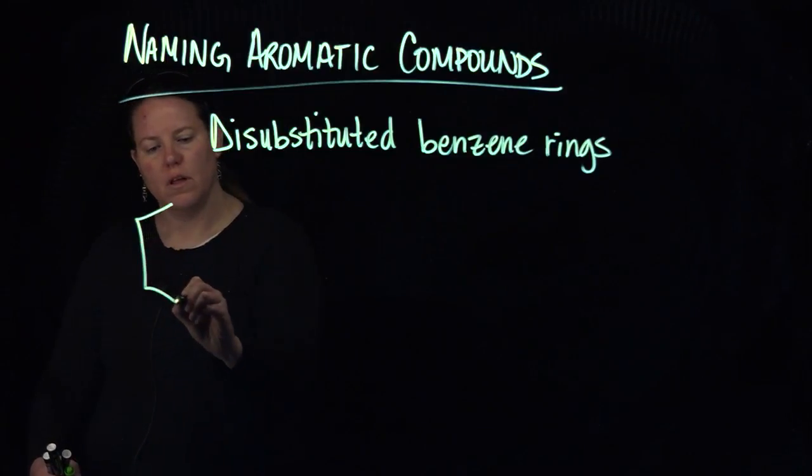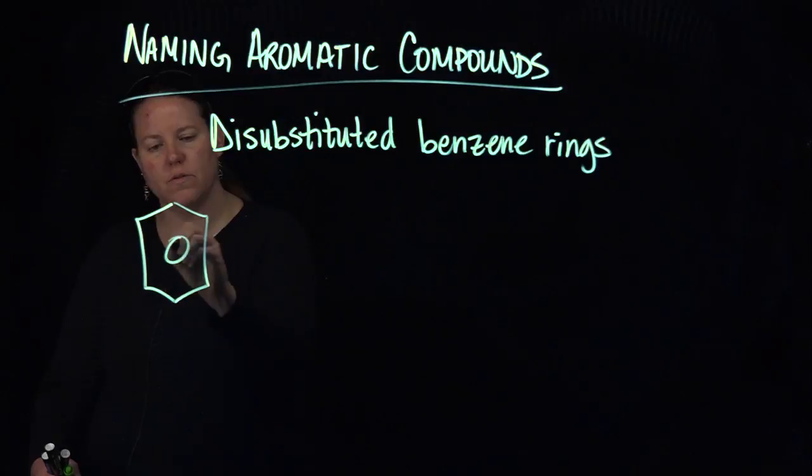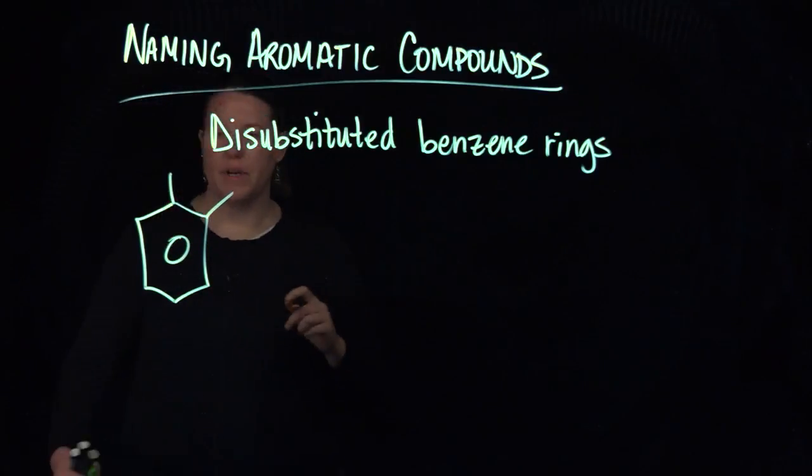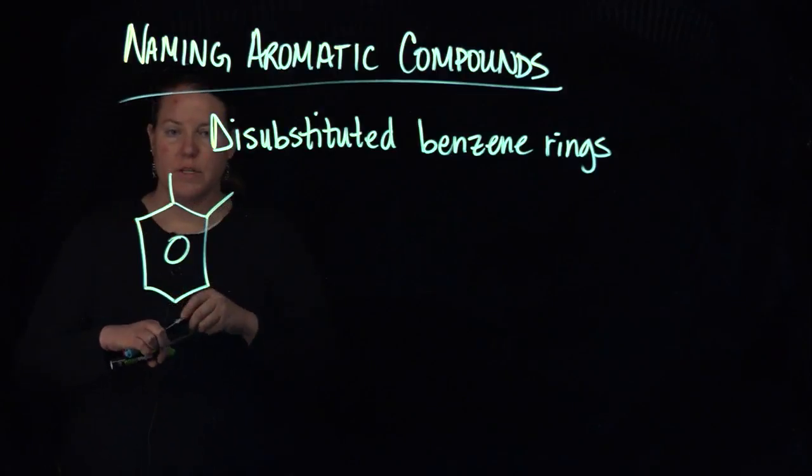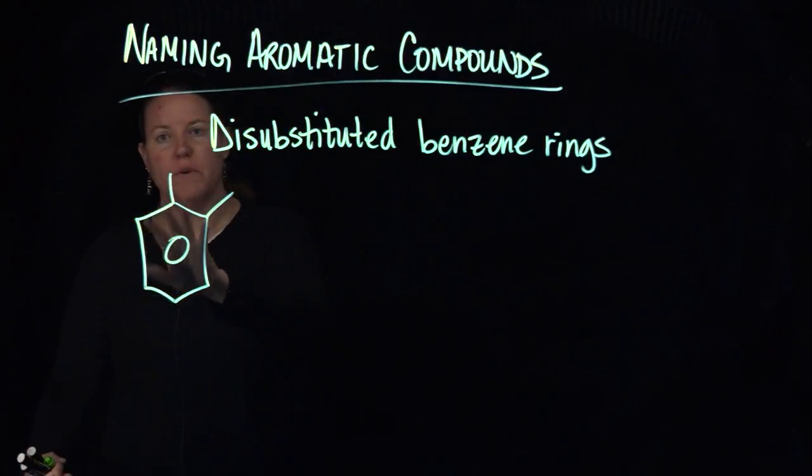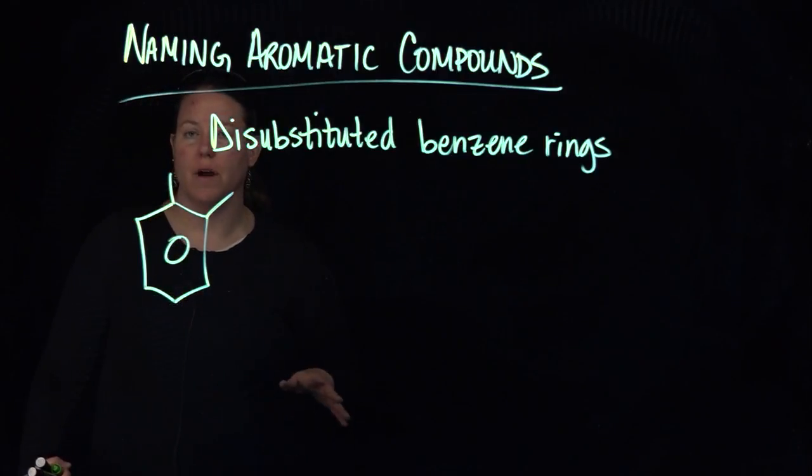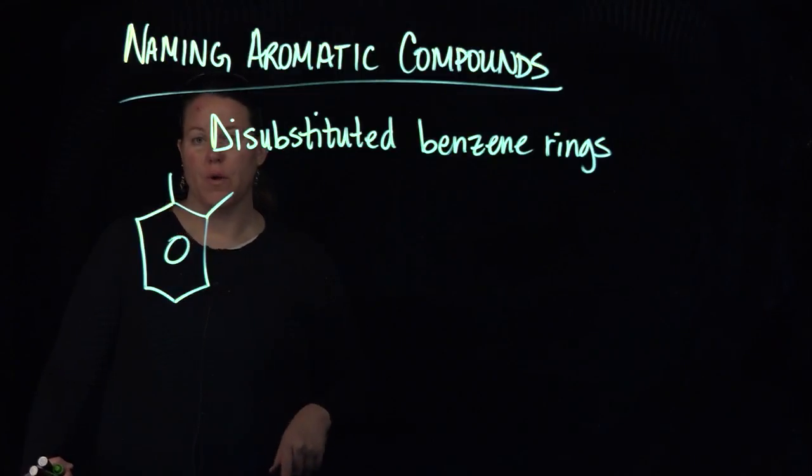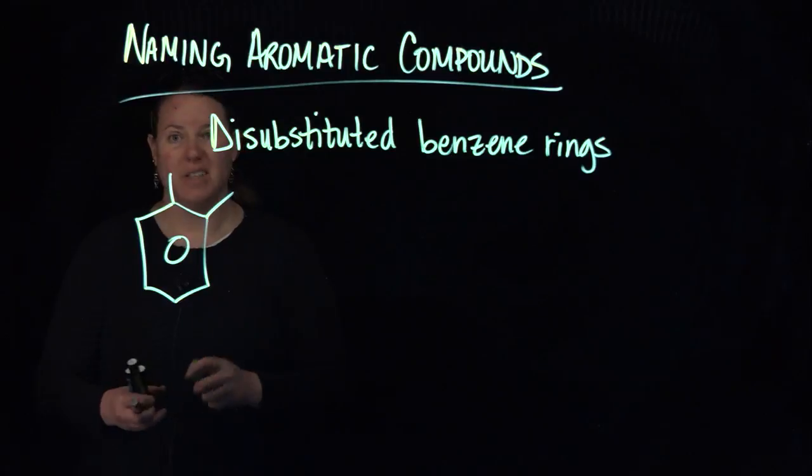So let's introduce you to something that is a common name. So this particular compound is a benzene ring with two methyl groups coming off of it. We know that if we have one methyl group that we call that toluene, this one is called xylene.